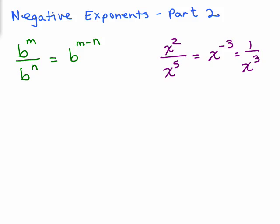But then the x is in the denominator. So that would give me the positive exponent and I have 1 in the numerator. So b to the m over b to the n is also 1 over b to the n minus m.